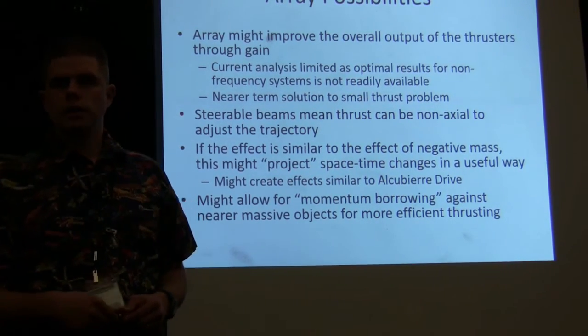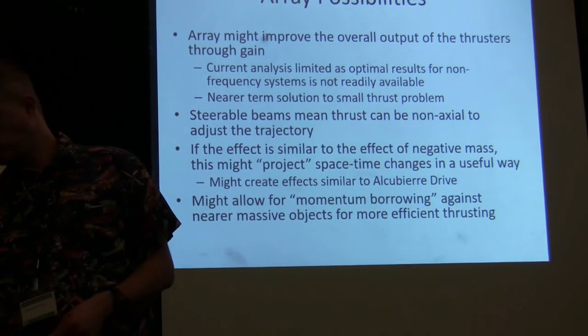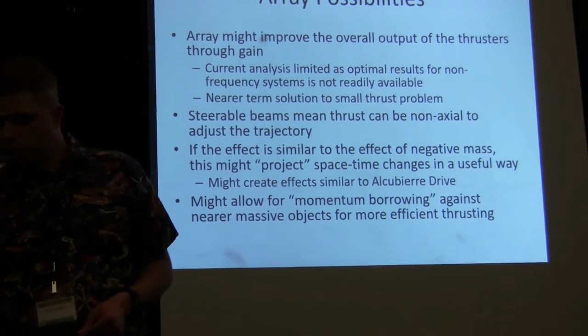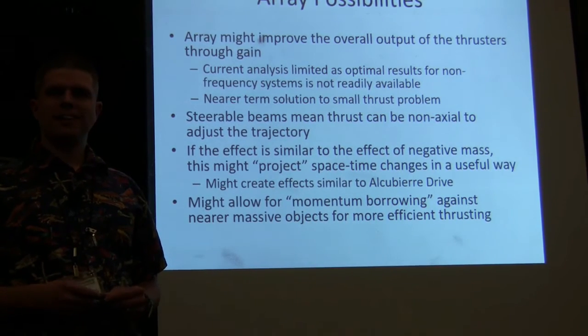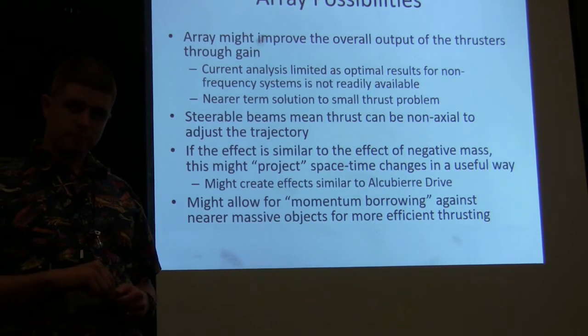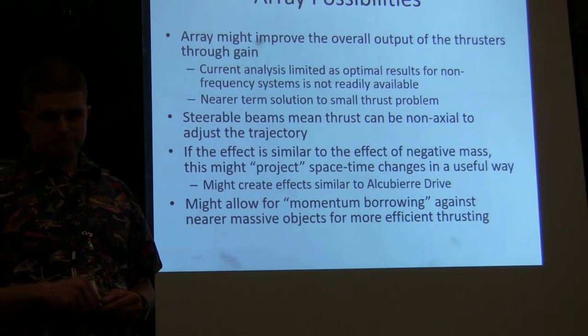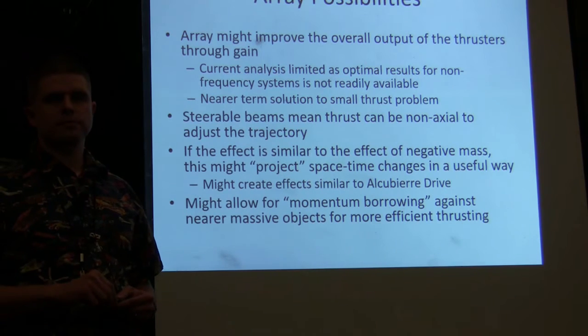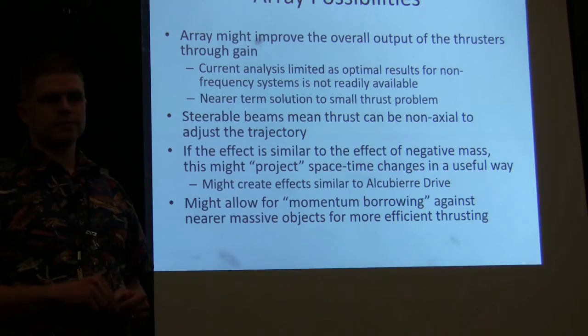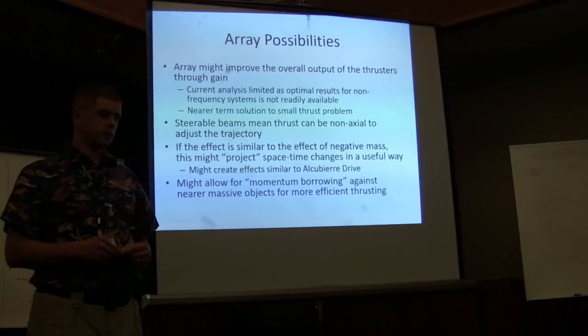The momentum borrowing thing is, I mean, as the Mach effects are originated by mostly the distant mass of the universe, would this really work? I was saying about momentum borrowing, okay? The effect of the sun is 10 to the minus 9, and the effect of the earth is 10 to the minus 11. Okay. So is it possible to make the momentum borrowing? Yes.